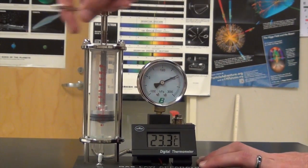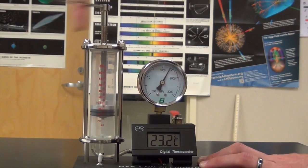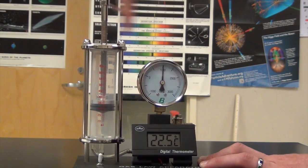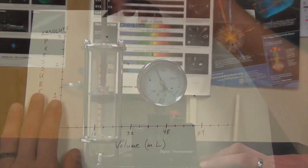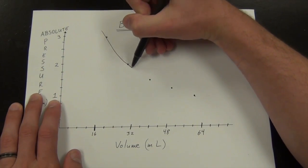One more gas law experiment can be done with this piston chamber. As I increase the volume, the pressure goes down. It's an inverse relationship. How do you graph that with a straight line?